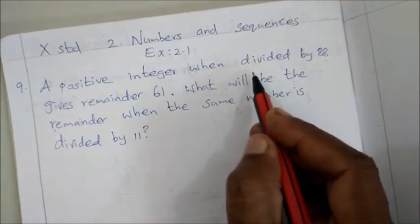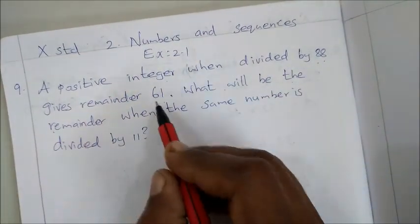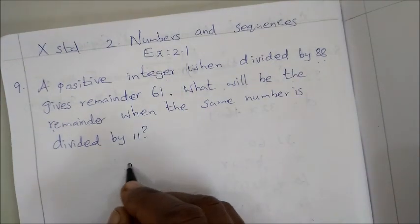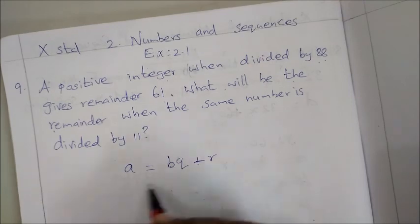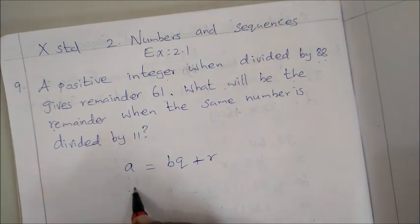When divided by 88 gives remainder 61. So we use the formula A equals BQ plus R. Okay, so the positive integer, the remainder...